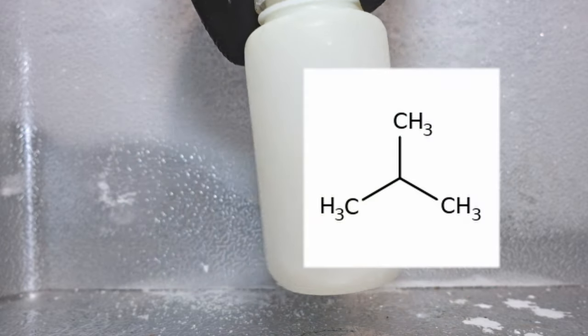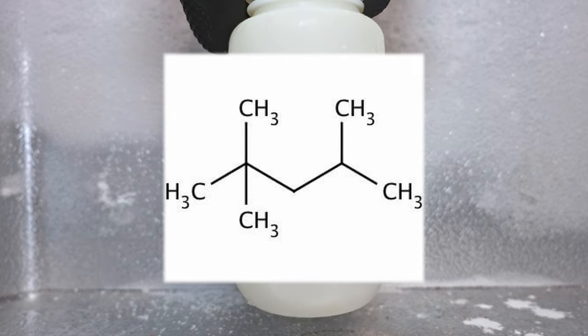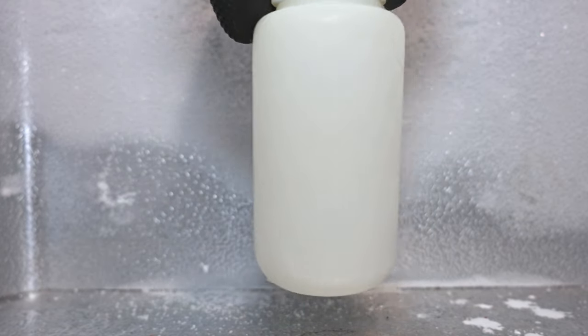In the presence of isobutane and high pressure, they can couple to form 2,2,4-trimethylpentane, commonly known as motor octane. But that's enough about the wonders of isobutylene. Let's begin.